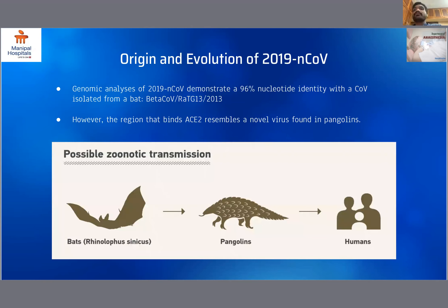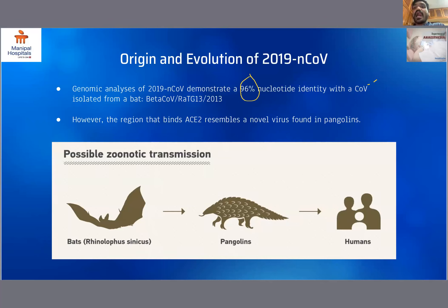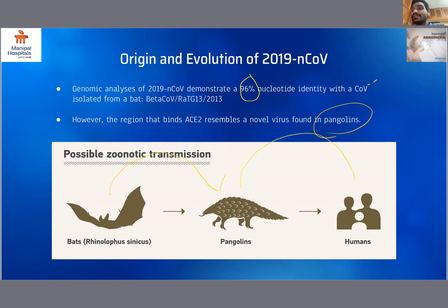Coming to the origin and evolution of the 2019 novel coronavirus: genomic analysis demonstrates a 96% nucleotide identity with the coronavirus isolated from a bat, the beta-coronavirus RaTG13-2013. Phylogenetic analysis showed that the RNA-dependent RNA polymerase gene of SARS-CoV-2 is most closely related to that from bats. However, the receptor binding domain of SARS-CoV-2's spike protein — the region that binds to ACE2 — corresponds to amino acid residues taken from coronavirus present in pangolins. These findings suggest that SARS-CoV-2 may be a recombinant virus that jumped two species to reach humans: from bats to pangolins, and from pangolins to humans. This is based on a study by microbiologists from the University of Hong Kong, though the genetic proof is yet to be fully confirmed.